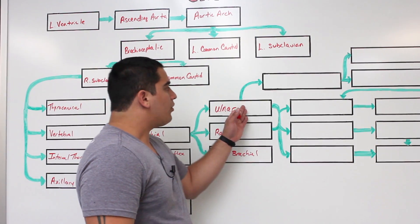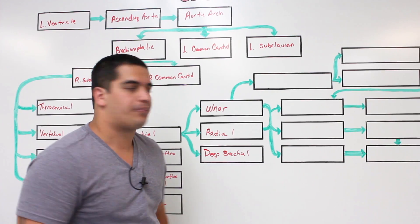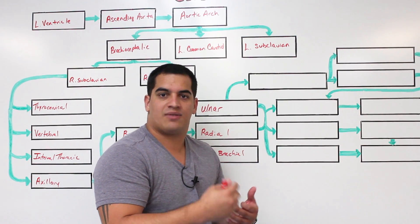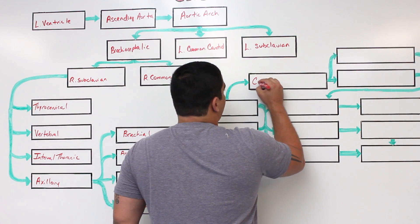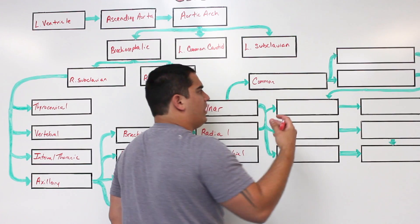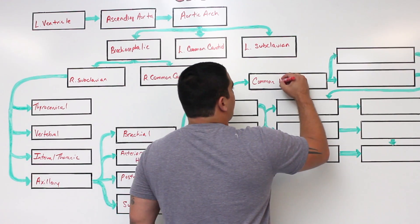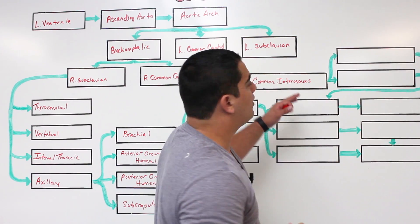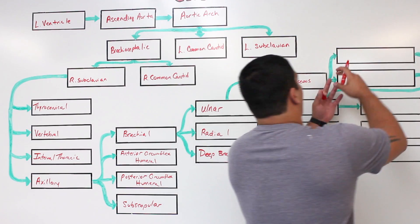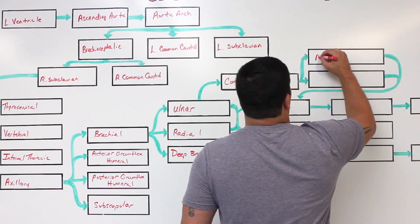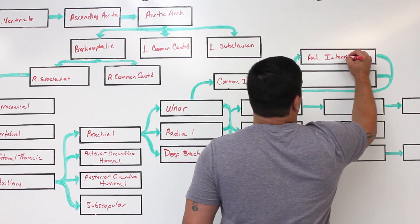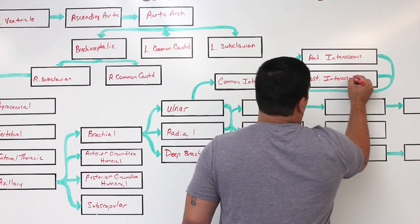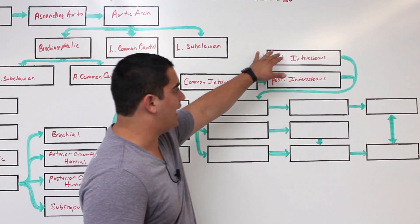The ulnar artery, as it continues, gives off a small communicating branch that actually runs in between the radius and the ulna within what's called the interosseous membrane, which is a dense fibrous irregular connective tissue. This one is called the common interosseous artery. When you hear 'common,' think it's going to be branching — and it does. The common interosseous artery is going to split into an anterior interosseous and a posterior interosseous.